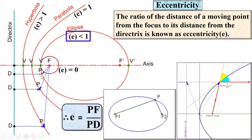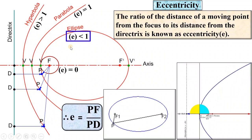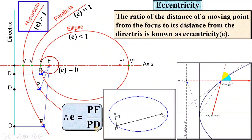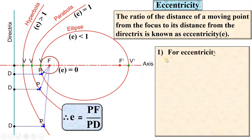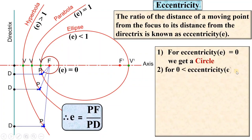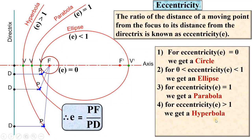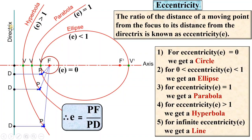In case of ellipse, PF is less than PD and that is why eccentricity is less than 1. In case of parabola, PF is equal to PD, so eccentricity equals 1. In case of hyperbola, PF is greater than PD, so eccentricity is greater than 1. For eccentricity equal to 0 you get a circle; for 0 to 1 you get an ellipse; exactly equal to 1 gives a parabola; greater than 1 gives a hyperbola; and for eccentricity tending to infinite, you get a straight line.